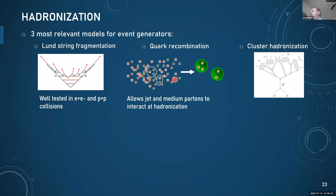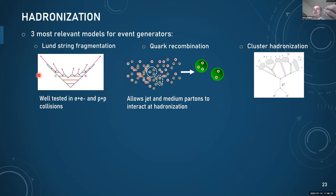Briefly about hadronization: there are three models. The Lund string fragmentation model — probably well known — where you form strings. The idea is that if you pull apart quarks above a certain distance, you no longer have a Coulomb-like potential but a string-like potential. Typically the string is between a quark and an anti-quark, with gluons acting as kinks adding energy. These strings then decay into hadrons through tunneling processes. The other one is cluster hadronization, which we're not using. The once-new kid on the block is quark recombination, where starting from quarks in phase space you calculate the overlap with hadron wave functions and determine quarks that directly form hadrons.